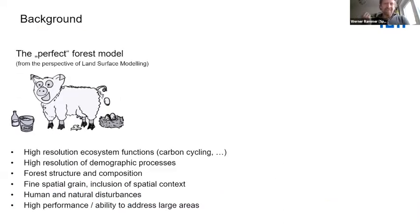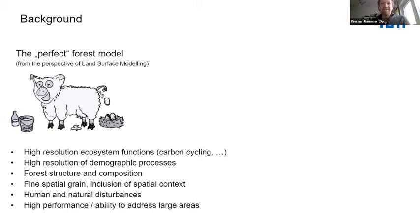The perfect model should have high resolution in the functions of ecosystems, but should also have high resolution in demography — like regeneration, seed production — and in forest structure and composition. It should be on a fine spatial grain, include spatial context, and include human and natural disturbances, all while remaining high-performant and able to address large areas. This is a little unrealistic — like the Eierlegende Wollmilchsau in German, the one farm animal that can do everything at no cost.